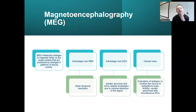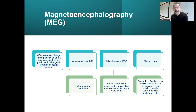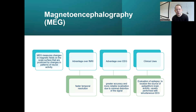Magnetoencephalography, MEG, measures changes in magnetic fields on the scalp surface that are produced by changes in patterns of neural activity. The advantages of MEG over fMRI include faster temporal resolution — you can see changes over very small amounts of time, which you don't really get with fMRI, which is better for spatial resolution. The advantages over EEG include greater accuracy and more reliable localization due to minimal distortion of the signal, which you do get with EEG because of the skull between the brain and the electrodes. Clinical uses of MEG include evaluation of epilepsy to localize the source of epileptiform brain activity, usually performed with simultaneous EEG — to get the best of both worlds.